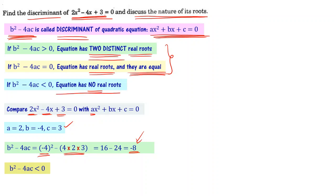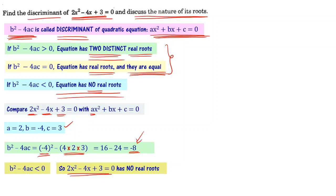Since the discriminant is less than 0, the given equation has no real roots. The quadratic equation 2x² minus 4x plus 3 equal to 0 has no real roots, meaning real numbers are not the roots of this particular quadratic equation.